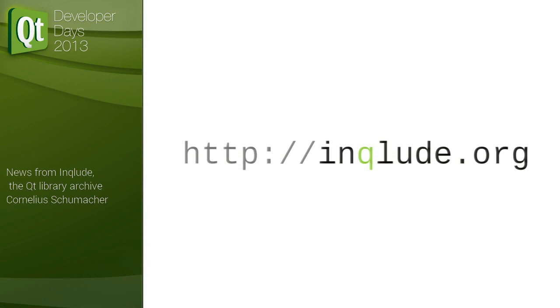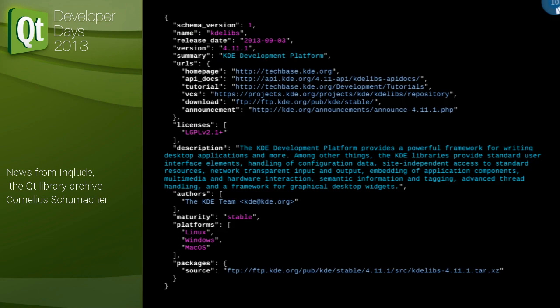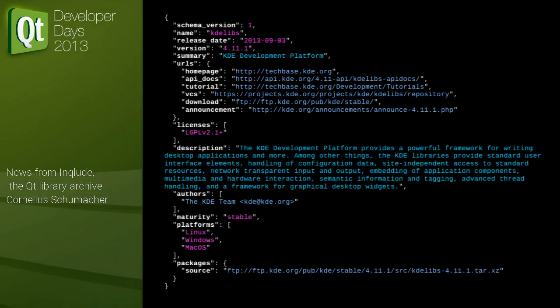That website is inqlude.org, and it's actually there now. We have a format — you don't have to read that in detail — we settled on a simple JSON format, which Qt can now also process natively. It contains all the metadata: the name of the library, the release date, the release version, information about the license, about the maturity — whether it's a stable, development, or test version — the available platforms, and importantly what packages are available, including source packages and binary packages so we can integrate with native packaging systems.